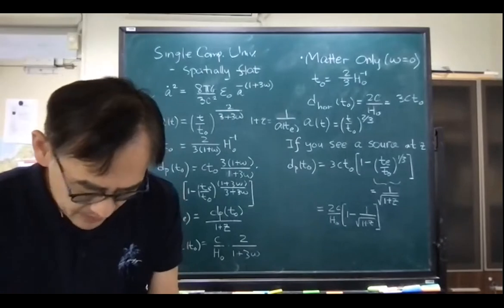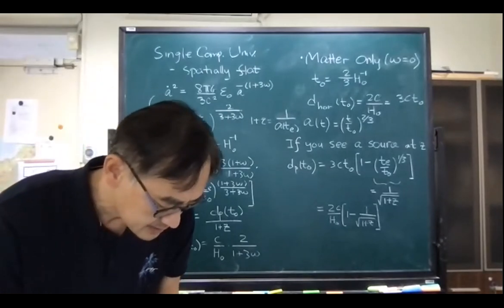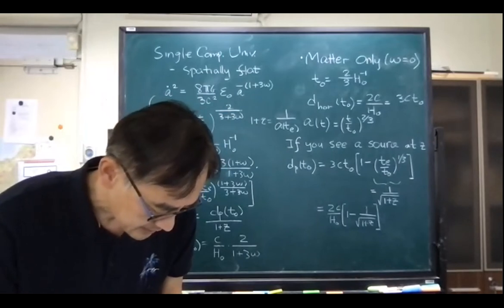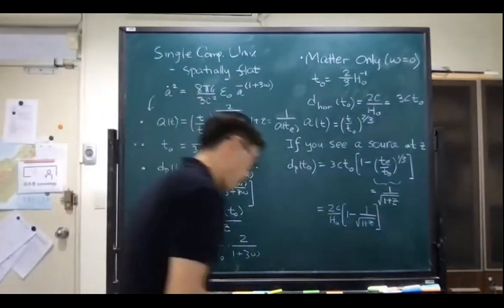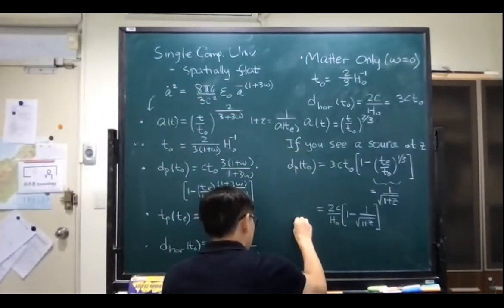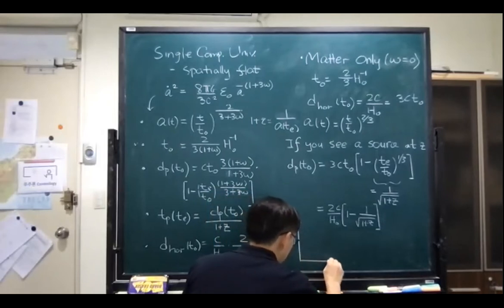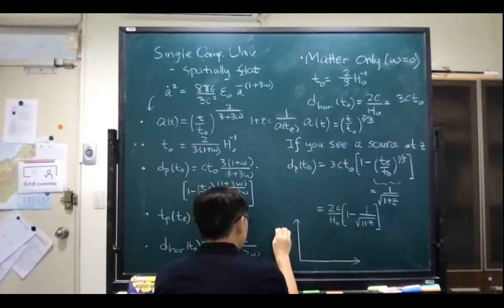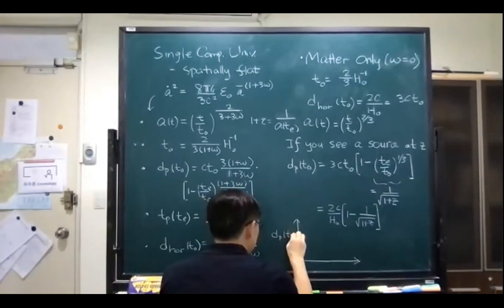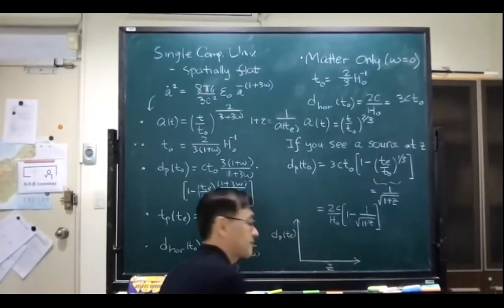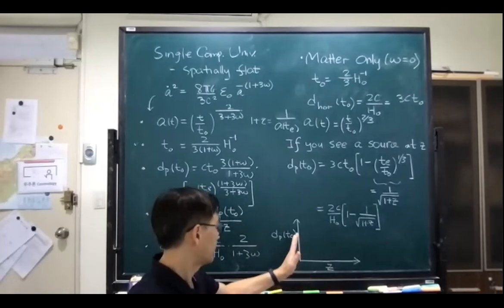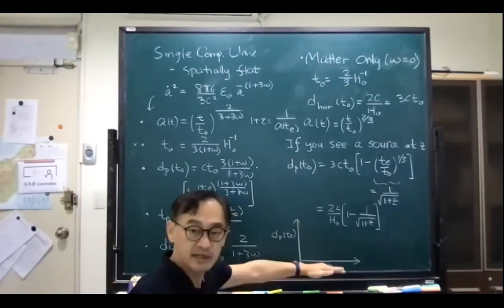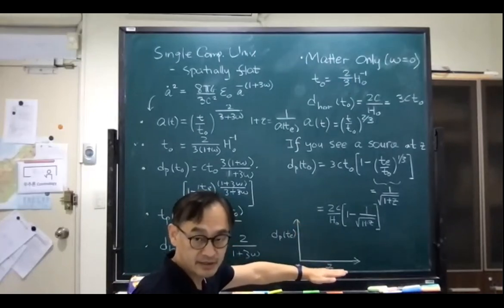All right. What else do we want to talk about in the matter-dominant universe? One more thing: I'm about to mention it in the plot I was showing. If we take a look at d_p(t_e) as a function of z, and remember I am plotting this on a log scale on both axes.